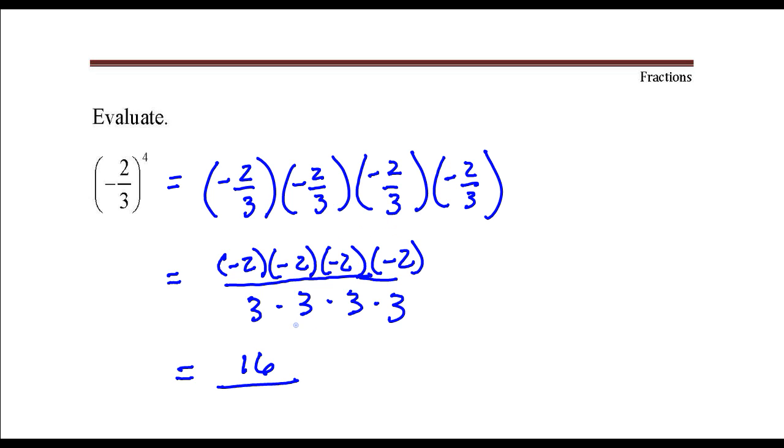In the denominator, three times three is nine, times three is twenty-seven, times three is eighty-one. And that's our answer here.